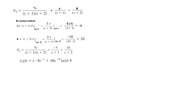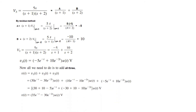So v3 = −5/(s+1) + 10/(s+2). Taking the inverse Laplace transform gives v3(t). We now have all three voltages in the time domain. By the superposition theorem, we add all three to find the total capacitor voltage: vc(t) = v1(t) + v2(t) + v3(t). This sum is our final answer for the voltage across the capacitor.